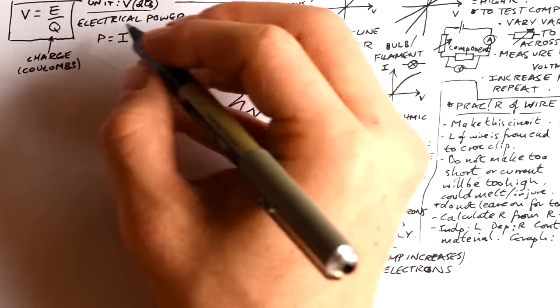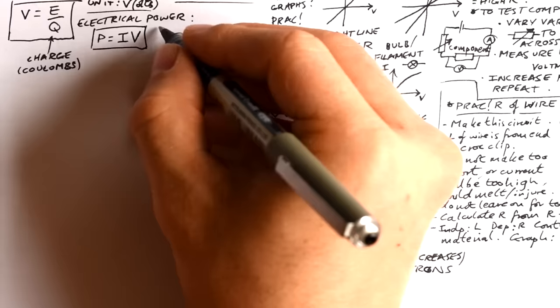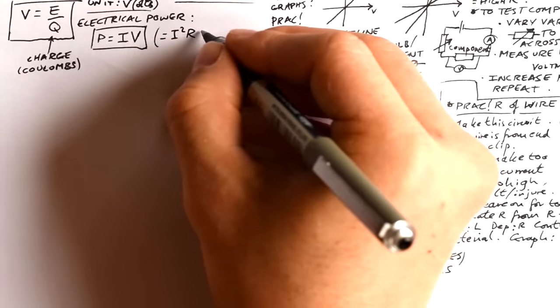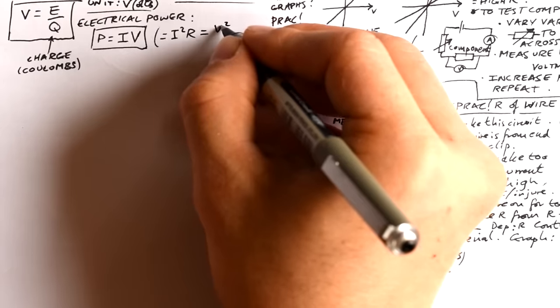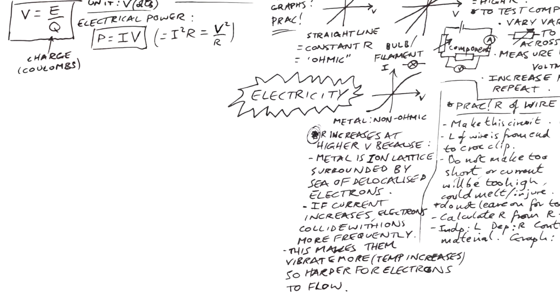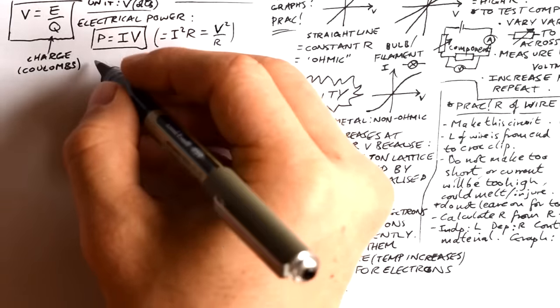Electrical power. We know power is rate of energy transferred, energy divided by time, but we can also calculate electrical power from current times voltage. It's unlikely they'll have to do this, but you might be asked to find power from the resistance of a component. In that case, we need to substitute Ohm's law in. We can either replace V. In that case, we get I squared R or replace I and we get V squared over R.